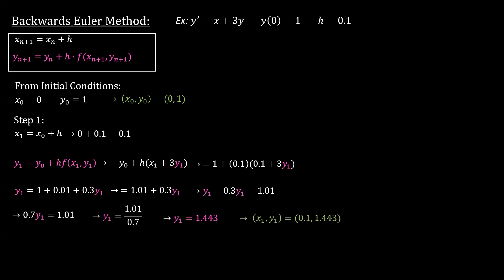Plug it in coordinate form and you get x1, y1 equals (0.1, 1.443). So this is the method for backwards Euler. Remember if you want to see the other video, it should be over here in the description.